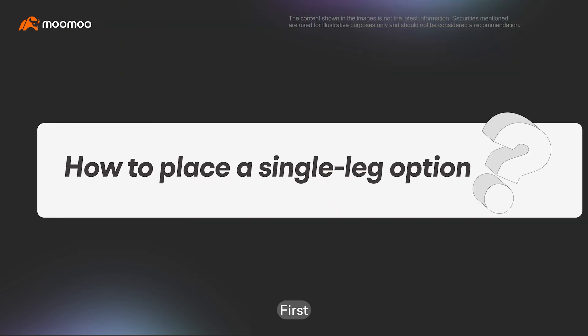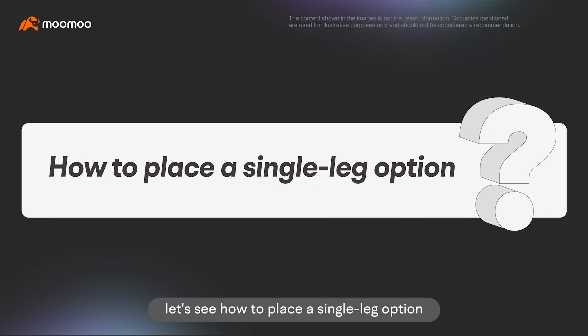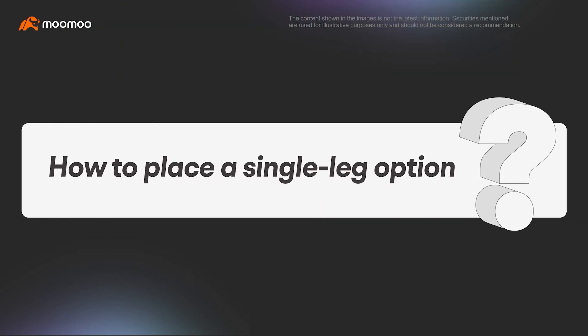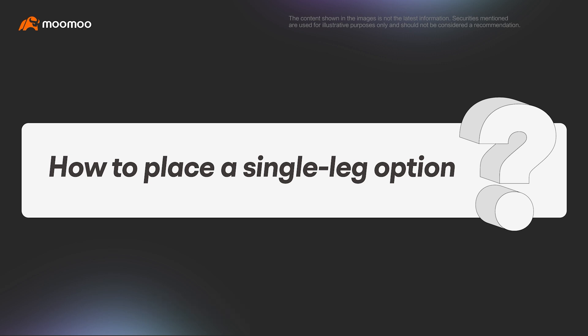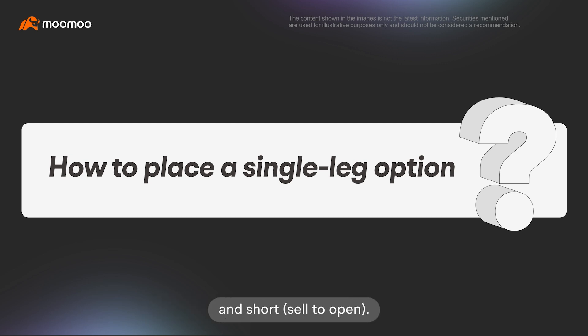First, let's see how to place a single-leg option. There are two directions of options trading: Long, buy to open, and Short, sell to open.